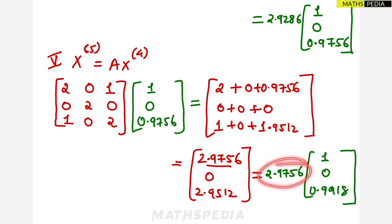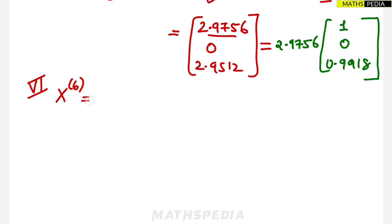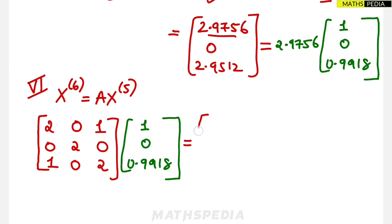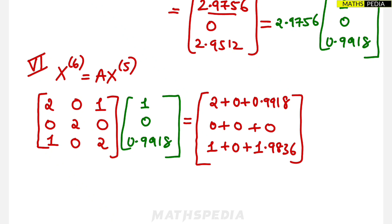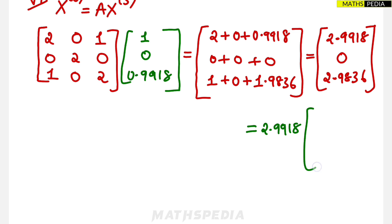Fifth iteration: x^5 = A × x^4, using [1, 0, 0.9756]. First element: 2 + 0.9756 = 2.9756; second: 0; third: 1 + 2×0.9756 = 2.9512. Result is [2.9756, 0, 2.9512]. Taking 2.9756 outside, λ^5 = 2.9756 and the vector becomes [1, 0, 0.9918]. The λ values are getting closer together — stabilizing.